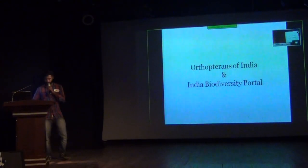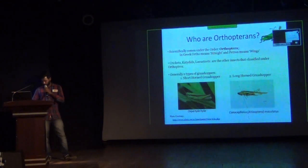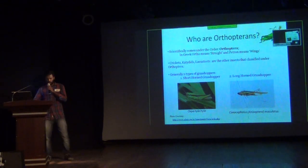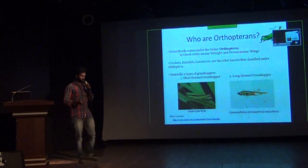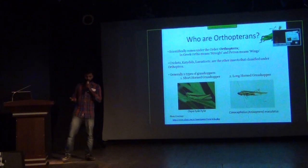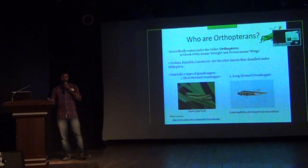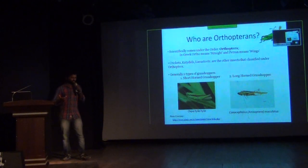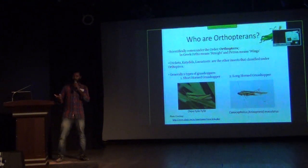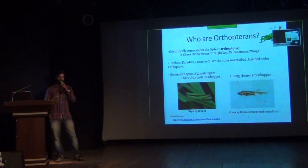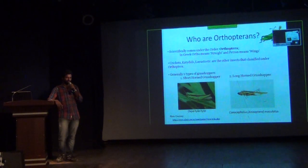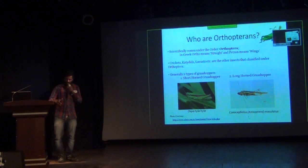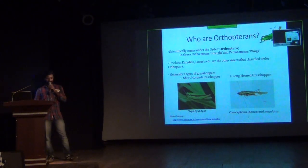I will just go into the general details of it. So, what are Orthoptera? Orthoptera means 'ortho' means straight and 'ptera' means wings. So these are basically straight-winged insects. There are many insects which have straight wings, but it's just basically the meaning of Orthoptera.